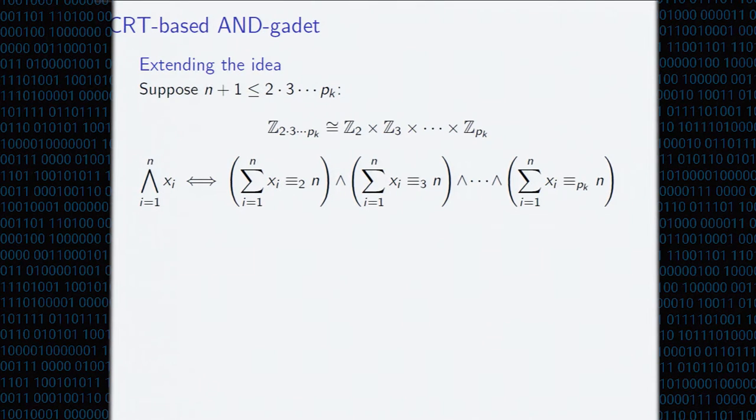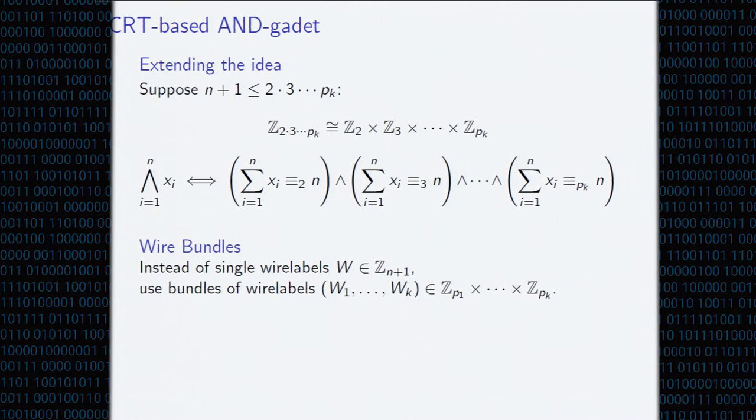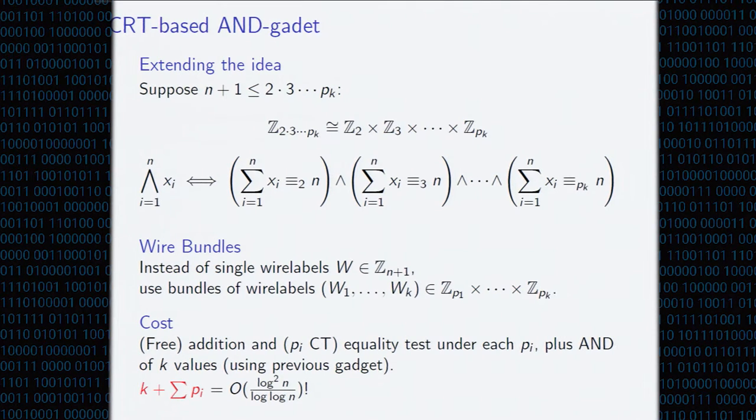So how are we going to do this? We're going to go back to this Chinese remainder theorem-based idea. And we're going to consider working in the product of a ring that's the product of primes again. And now to check if the sum of the xi's is n, we only need to check if the sum of xi's is equivalent to n mod 2, equivalent to n mod 3, and so on. And if all of these are true, then we know that it's equivalent to n mod all of this larger product, which is greater than n plus 1 and doesn't allow wraparound. So how are we going to do this? We're going to introduce a little bit of redundancy. Instead of having a single wire label for a value x, we're going to have k wire labels, each corresponding to the small prime in this product ring.